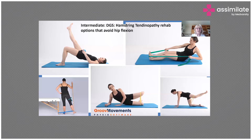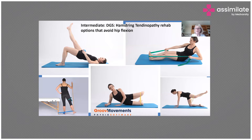We can do abduction and extension because we're not flexing the hip. There's abduction, the shin lift rather than the clam, and hip extension. The 'Jane Fonda' or 'fire hydrant' — abduction and external rotation using a resistance band — keeps the hip out of flexion, giving strengthening without irritation.